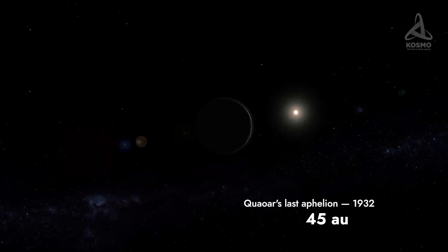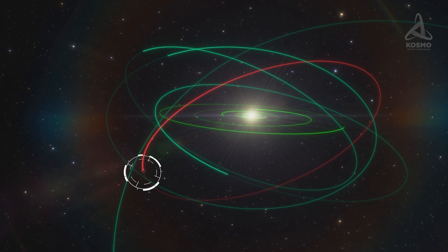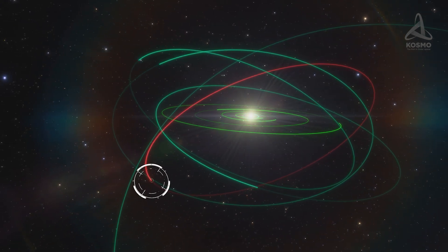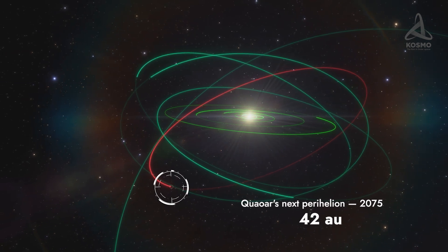Now, Quaoar is on its way to its orbit's perihelion, which is estimated to be reached in about 2075. The distance between the planetoid and the Sun will be 42 astronomical units at that point.